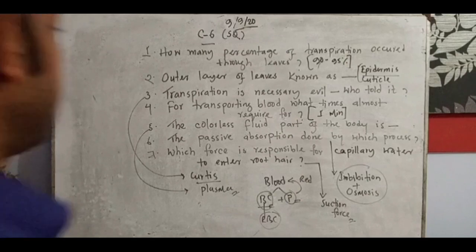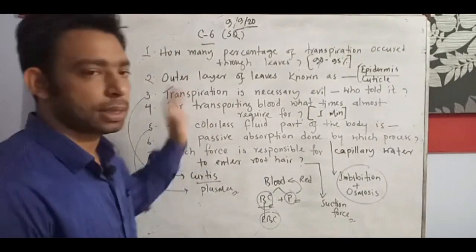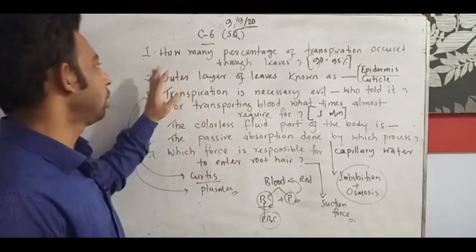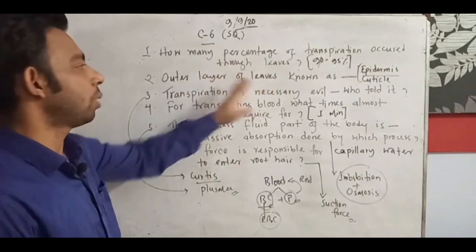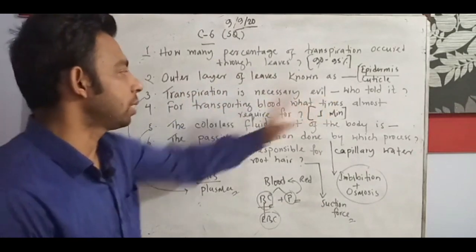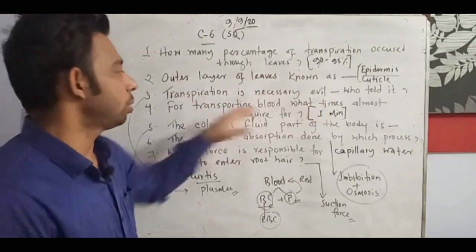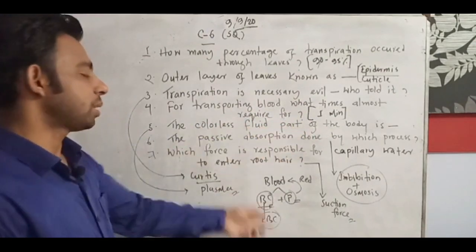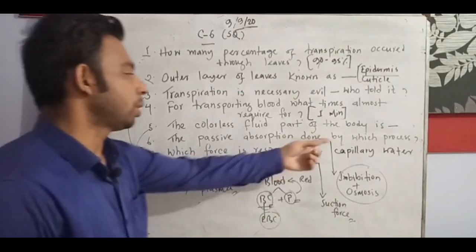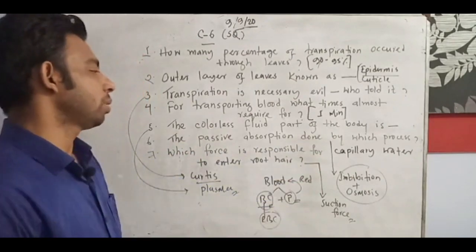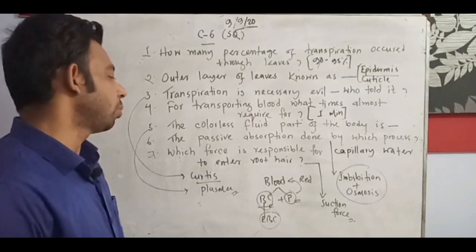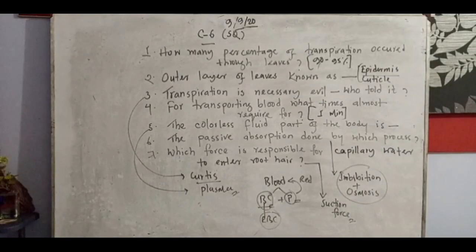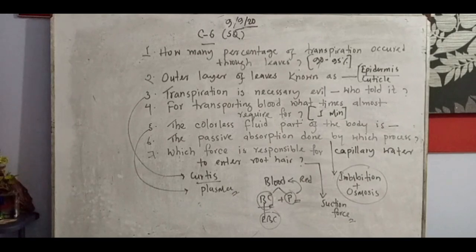Dear students, repeating the key points: percentage of transpiration — 95 percent; outer layer — epidermis or cuticle; transpiration is a necessary evil — Curtis; transporting blood — almost one minute; colorless fluid part of the body — plasma; passive absorption — imbibition and osmosis; force responsible for capillary water to enter root — suction force. Please practice at home, and those who were not present, please watch the video again. That's all.